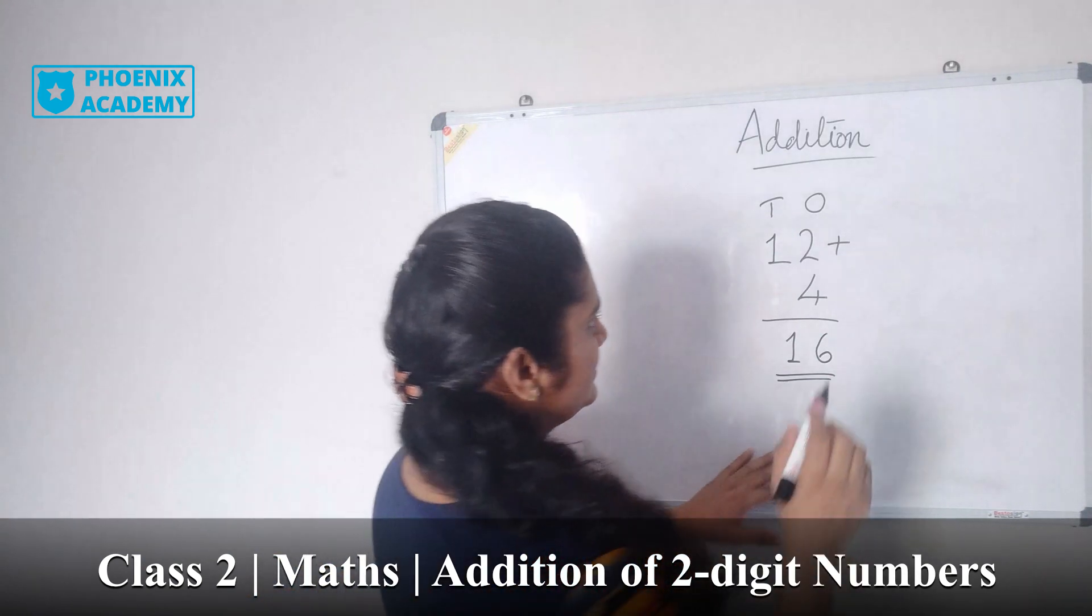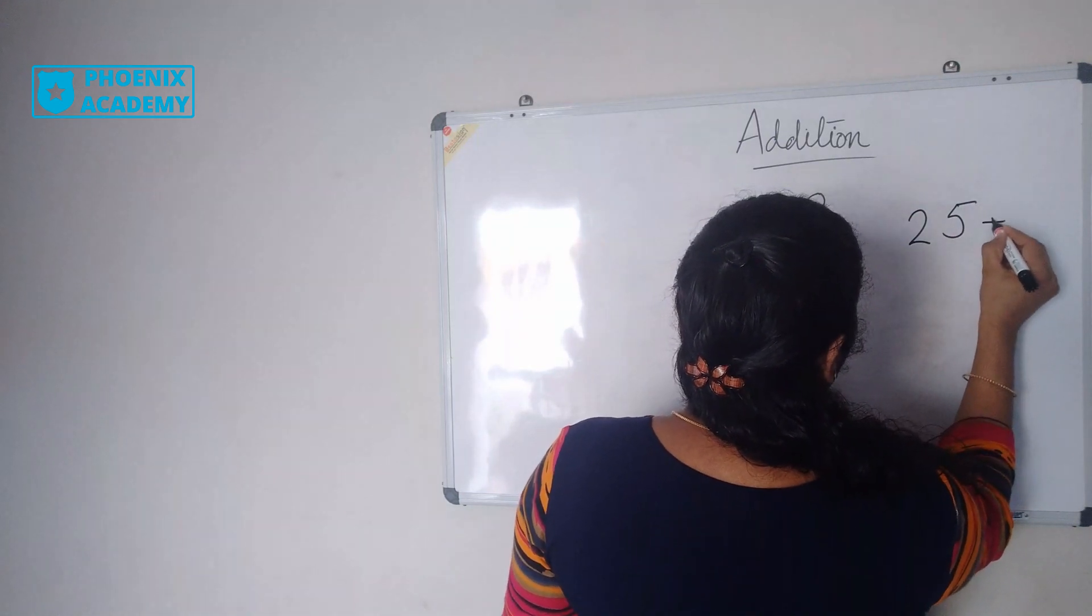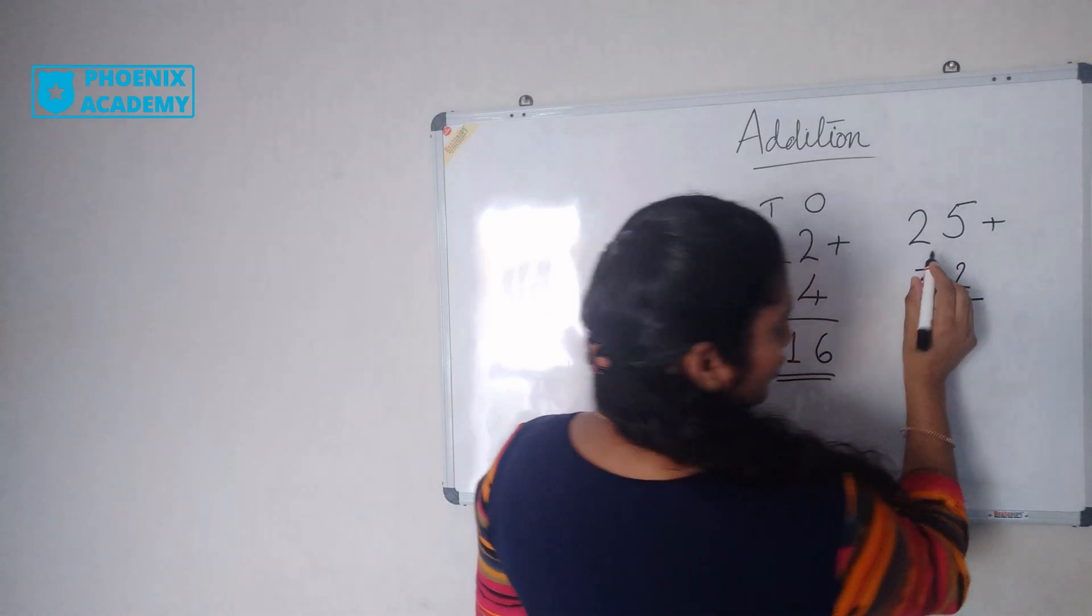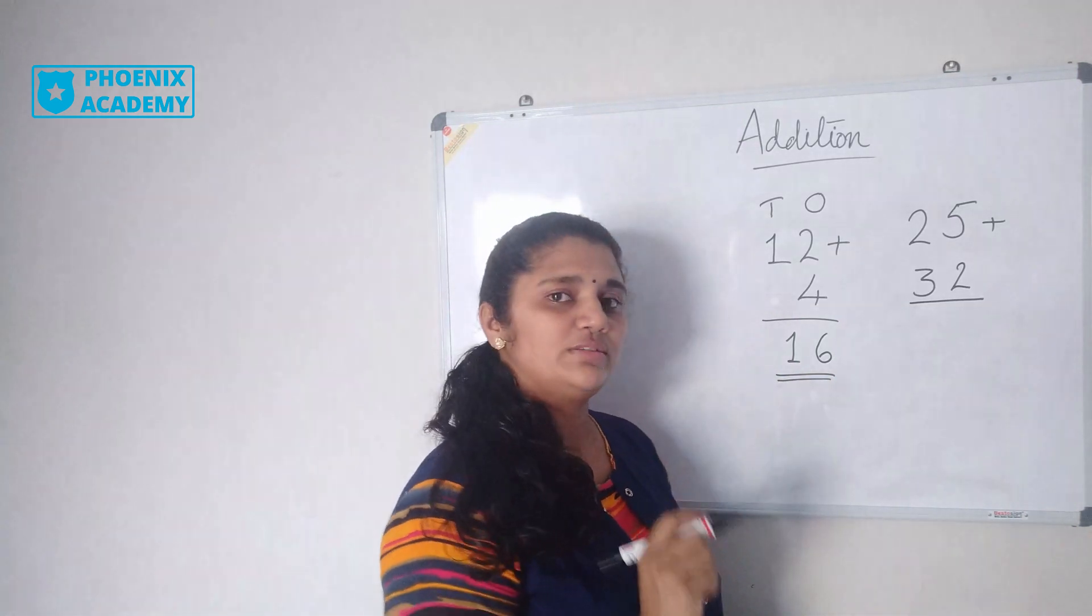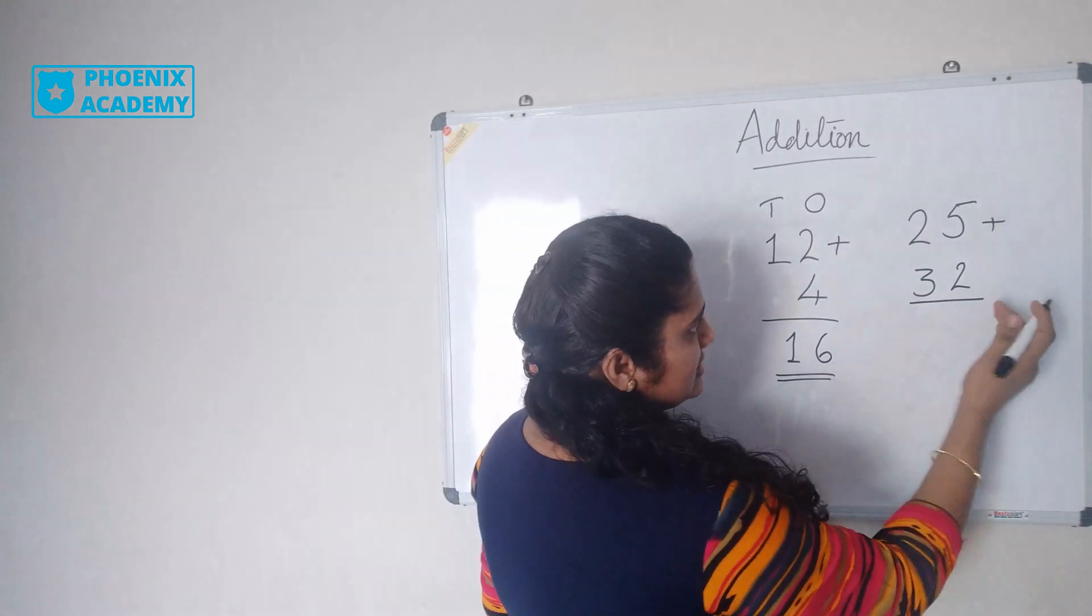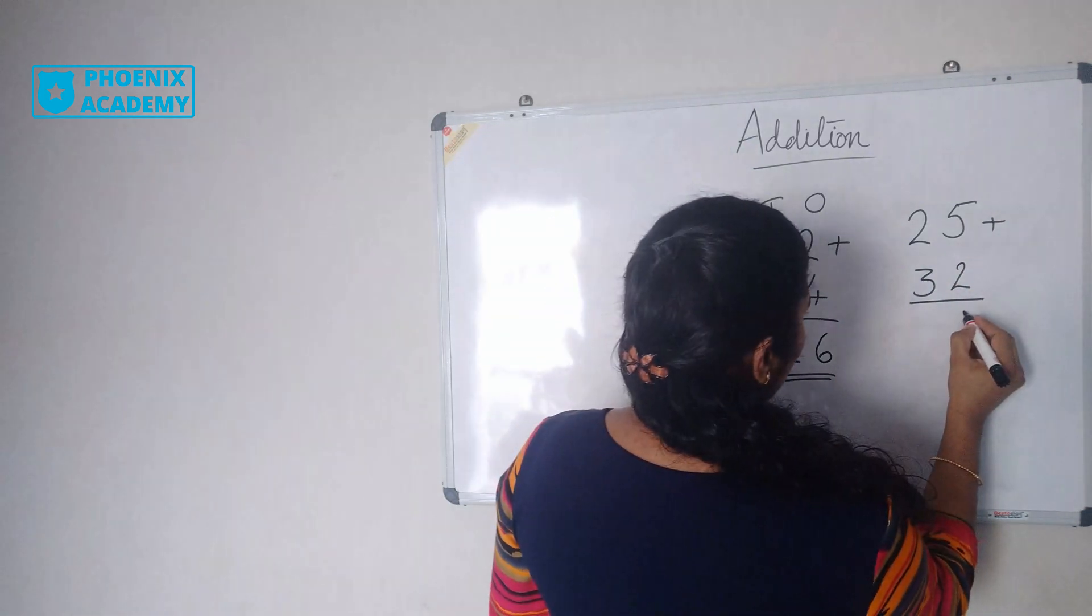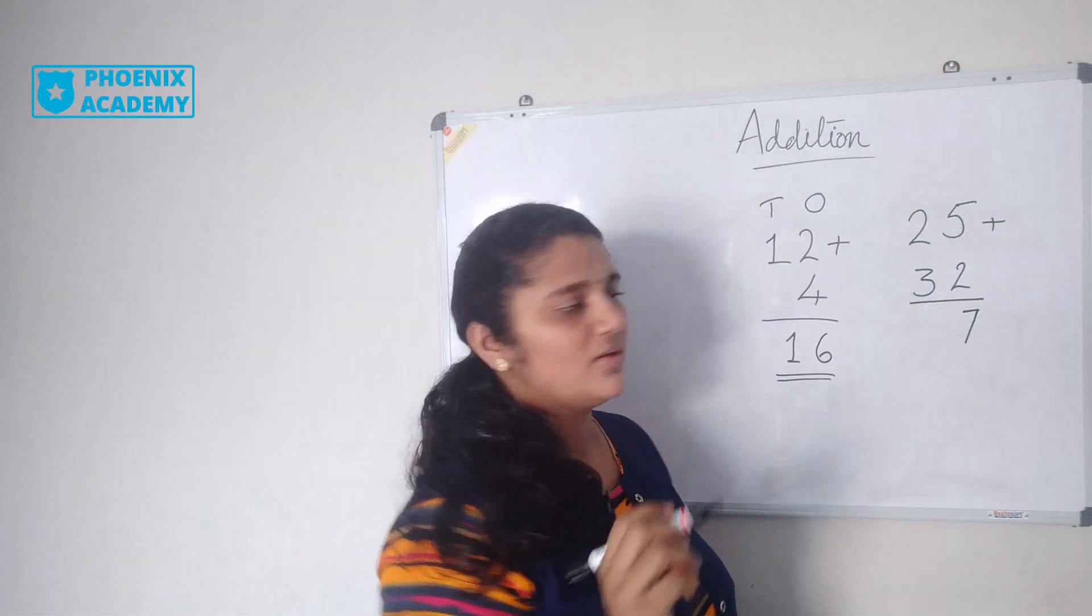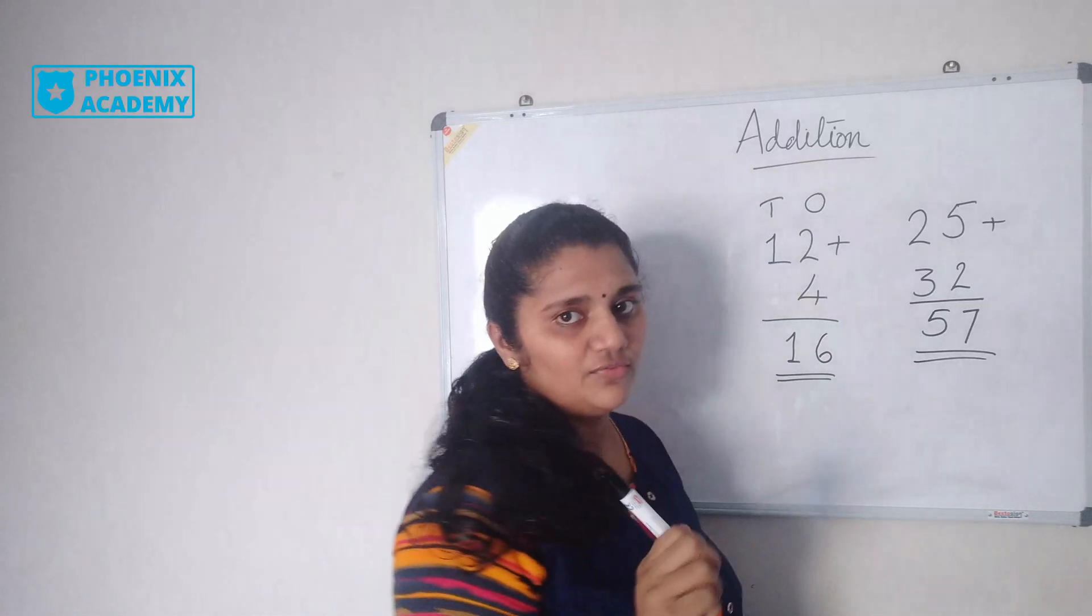Let's do more examples. 25 plus 32: 25 is 5 ones and 2 tens; 32 is 2 ones and 3 tens. Let's add the ones first: 5 plus 2 is 7. Then the tens: 2 plus 3 is 5. So the answer is 57.